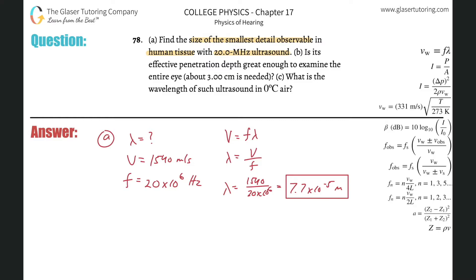Letter b says: Is the effective penetration depth great enough to examine the entire eye, which is about 3 centimeters? You have to remember that the max depth here, in general rule of thumb, is going to be 500 multiplied by the wavelength.